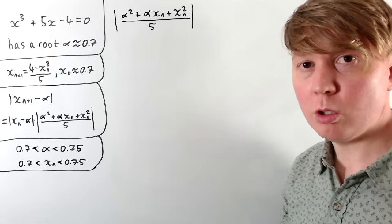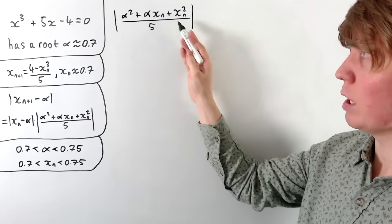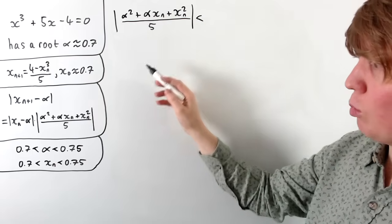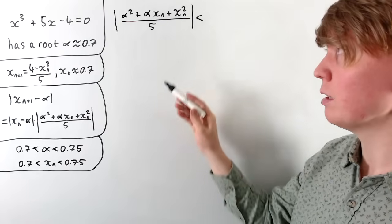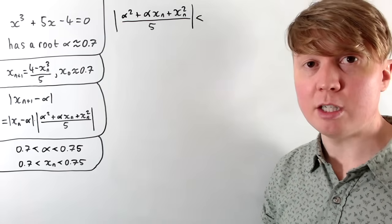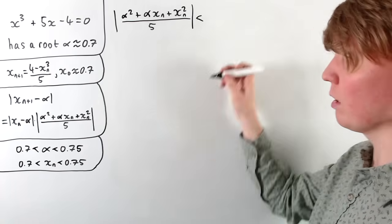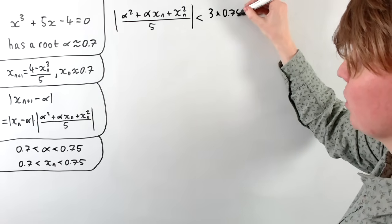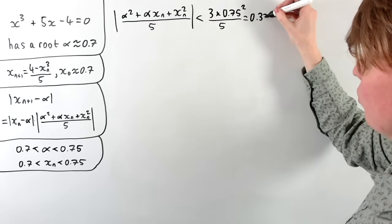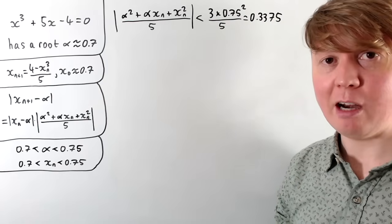Returning to the quadratic expression: since alpha and x_n are all positive, the absolute value is just equal to the quadratic expression itself. We know alpha squared is less than 0.75 squared, alpha times x_n is less than 0.75 squared, and x_n squared is less than 0.75 squared. So the quadratic is less than 3 times 0.75 squared, all divided by 5, which calculates to 0.3375 as our upper bound.